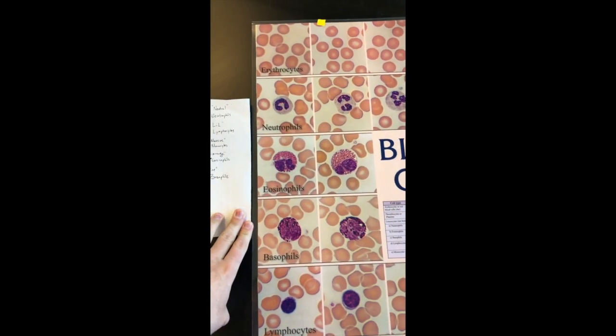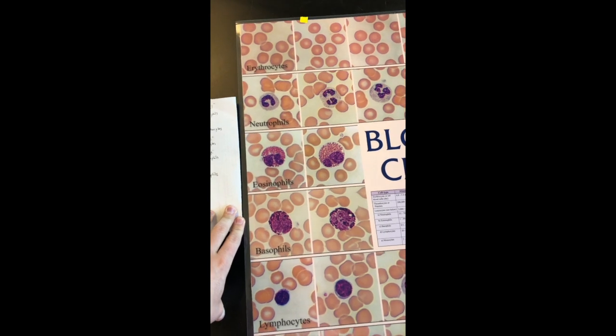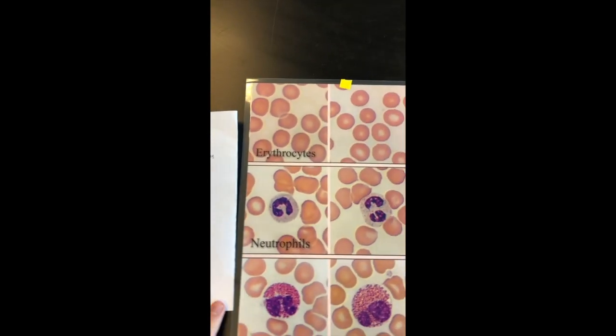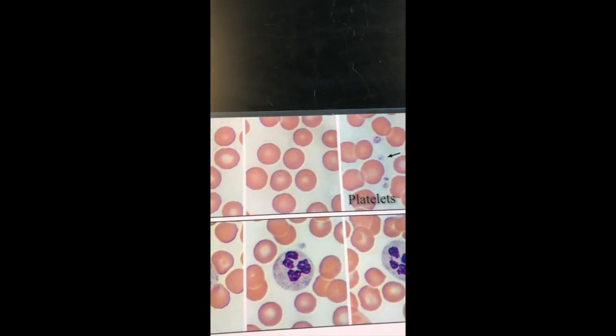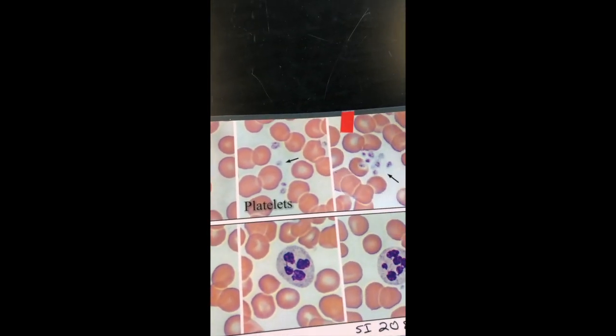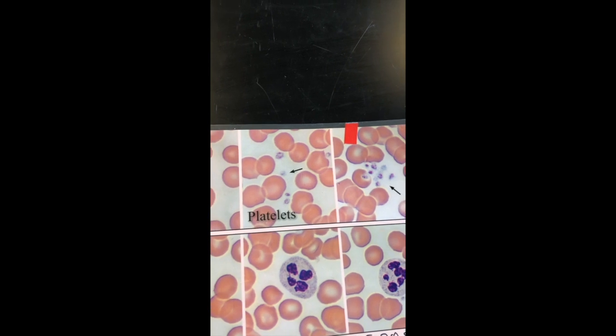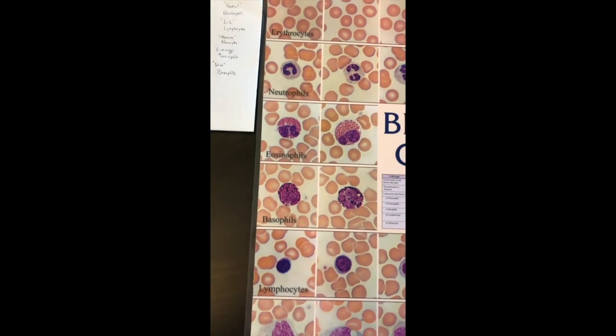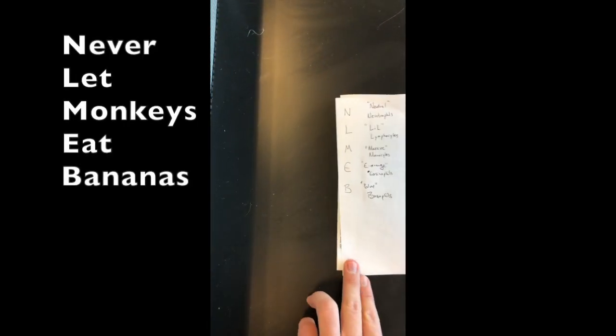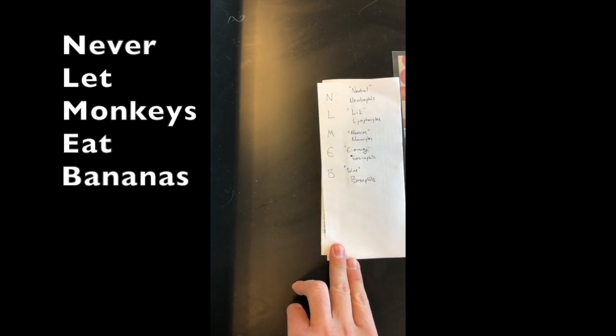Now we'll talk about the actual components of blood. The majority are red blood cells, or erythrocytes. Another structure is platelets, which are important in the clotting process. The thing we're going to spend the majority of our time on are the white blood cells. From class, you should remember the mnemonic: never let monkeys eat bananas — that's the white blood cells in order from most abundant to least abundant.